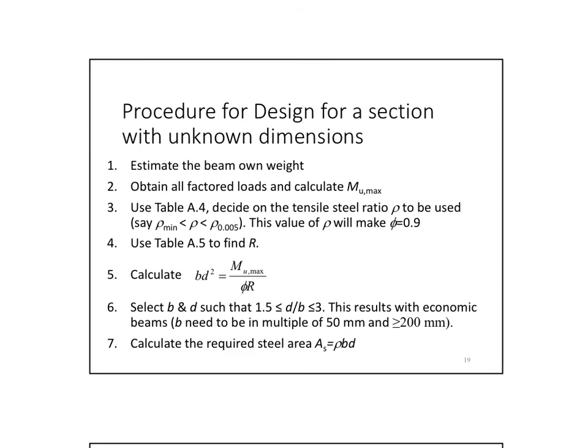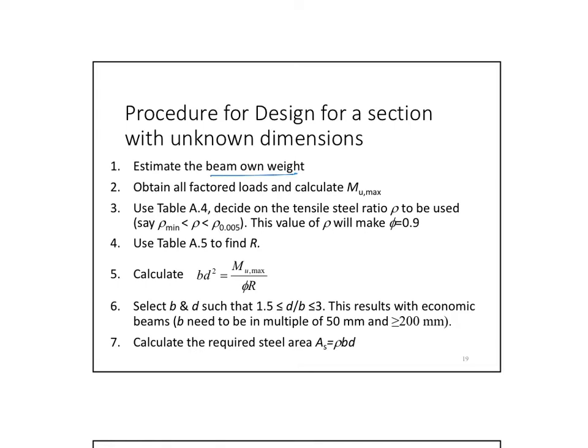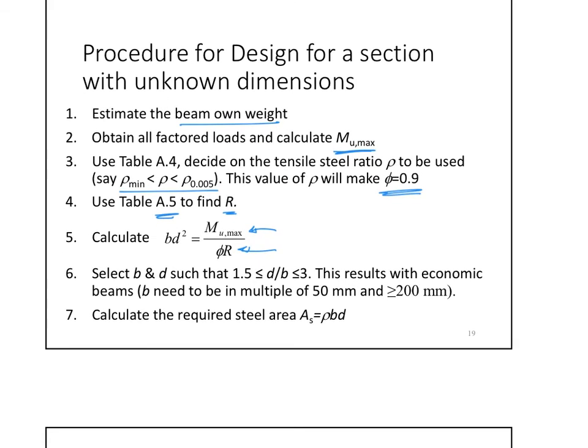Now, those are the procedures for designing a section with unknown dimensions. What do I do? I estimate the on weight. Obtain all the factor loads. And then use table A4, decide on the tensile ratio rho to be between rho minimum and rho 0.005. So, I'm making sure that it's above the minimum. And it is not all the way up to where it will be compression control or away from the tension control. And this value will make my phi equals 0.9. Then use table A5 to find R. Plug in the R along with the MU to find BD squared. There is another equation between B and D squared, which is D is about three times B. Or maybe two and a half, whatever you choose.